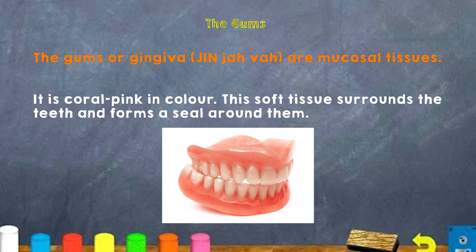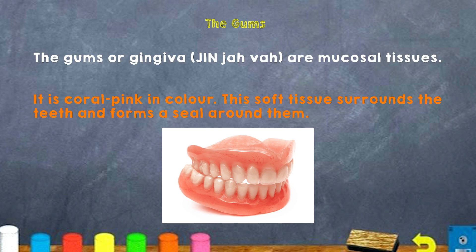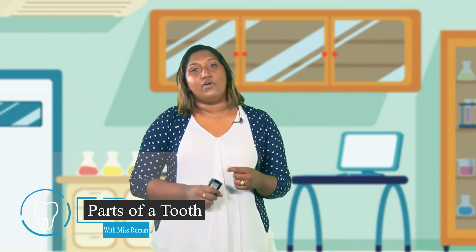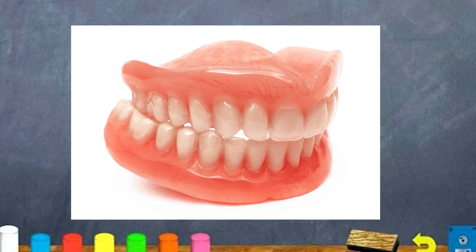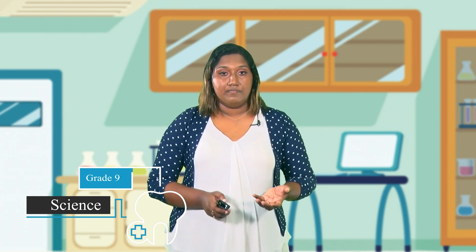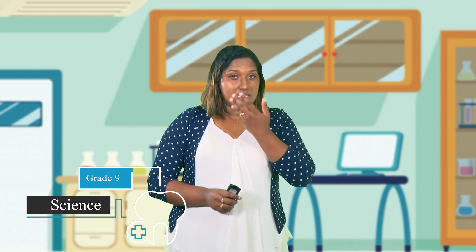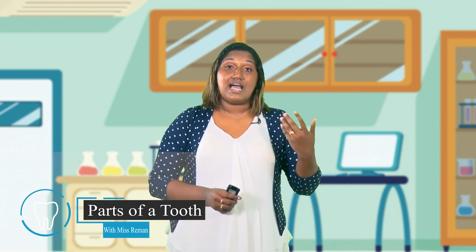Now let us talk about the gums. The gums are also called gingiva or muscular tissues. They are coral pink in color. This soft tissue surrounds the teeth and forms a seal around them. Between each tooth the gum fills the gap — sometimes lower for some people, sometimes higher for others. The gum helps to seal the area around the teeth, acting as a seal.